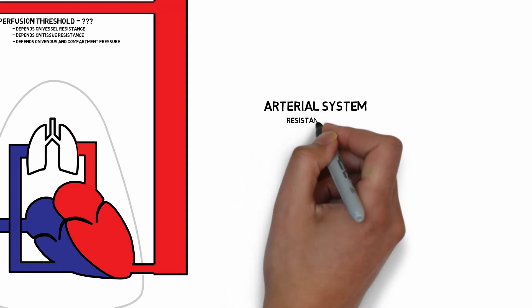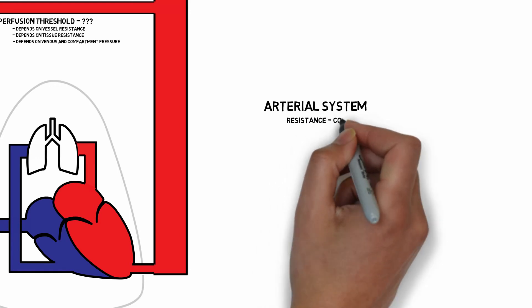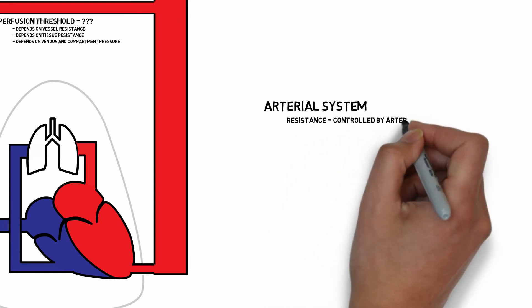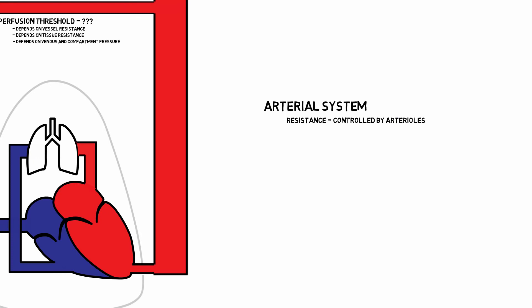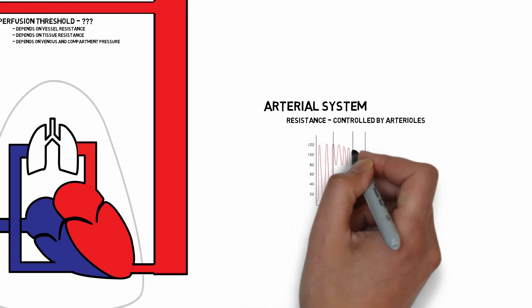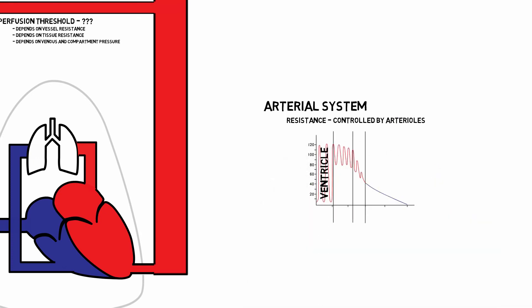Its key feature is the ability to control the flow of blood by resistance, mostly at the level of the arterioles. And you can see this as you move from the ventricle to the large arteries to the arterioles, where you see a large pressure drop before you get to the capillaries and the venous compartment.